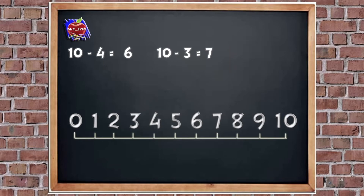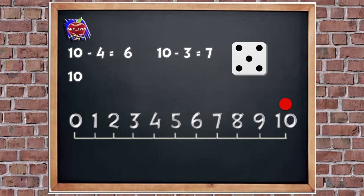Let's have one more go. We're going to start on 10 — put it in our number sentence — and let's see how many we need to take away. Yeah, five. So 10 take away five equals — can you have a go at this one on your number line? What did you land on? Let's do it together just to check. We're going to take away five, so five jumps back. One, two, three, four, five. What did I land on? So 10 take away five equals five. Did you get that one? Big pat on the back if you did.